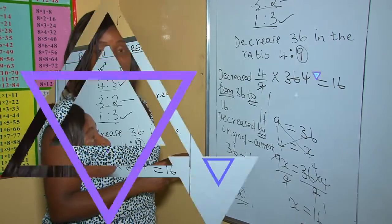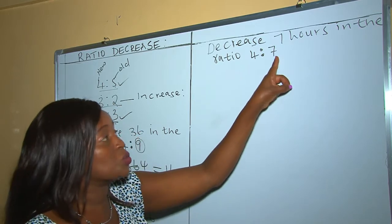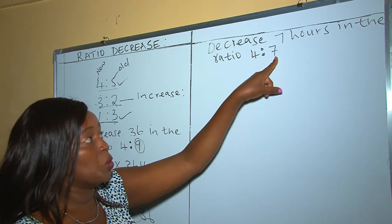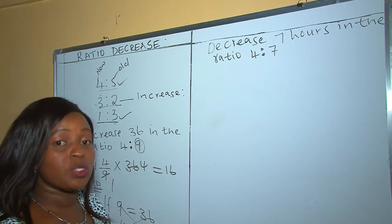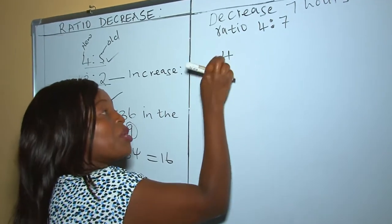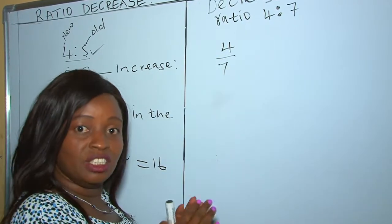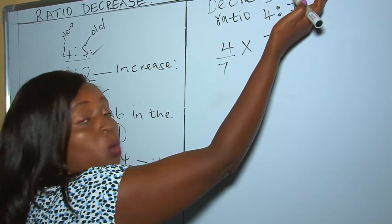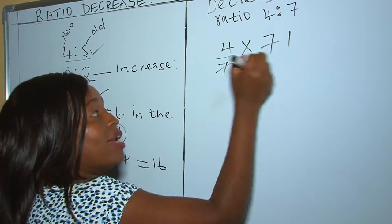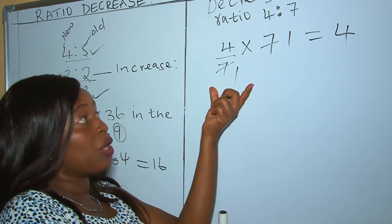In our second example, decrease 7 hours in the ratio 4 is to 7. As you can see, the current number is 4 and the original is 7. We are looking for 4. Using the fraction method, since this is a ratio decrease, the numerator becomes the smaller number 4 and the denominator becomes 7. Then you multiply by the quantity given, which is 7 hours. 7 divided by 7 times 4 gives us 4 hours.